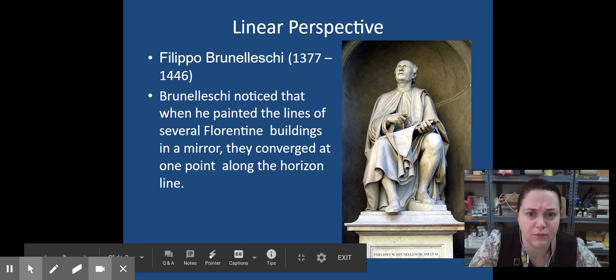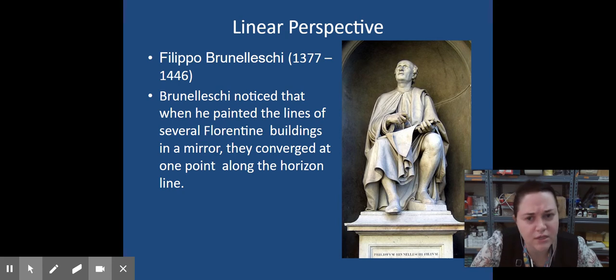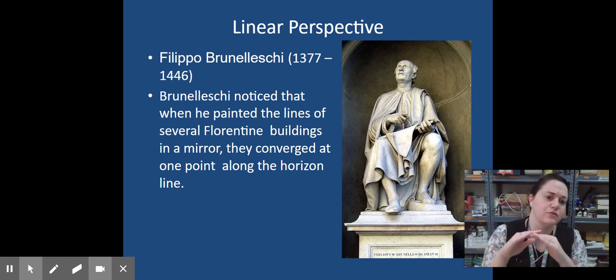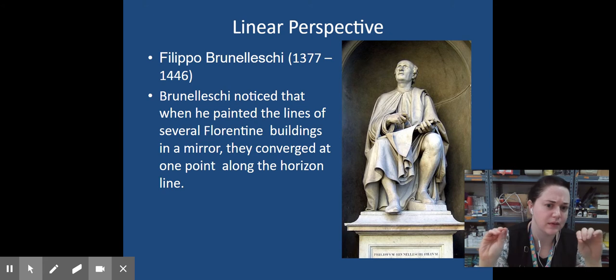Linear perspective was first observed by Filippo Brunelleschi, who was alive from 1377 to 1446. He was what we consider a Renaissance master. Brunelleschi first noticed that when he was painting the buildings of Florence and looking at them through a mirror, that straight edges all converged on a single point.